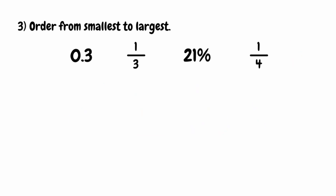For our last question, we want to order these values from smallest to largest, and again we'll convert them into a percentage. We can keep 21% as 21%. Starting from the left, we've got 0.3. To convert a decimal to a percentage, we multiply by 100, moving all digits two places to the left, giving us 30%.